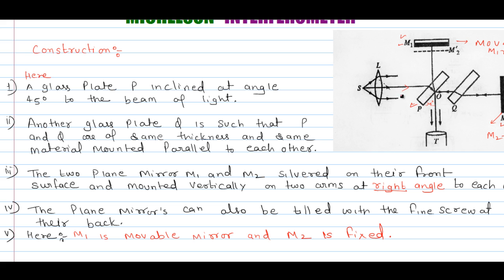This source is mounted on P and then Q, and this P and Q are inclined at 45 degree both. So this is the construction for the Michelson Interferometer.